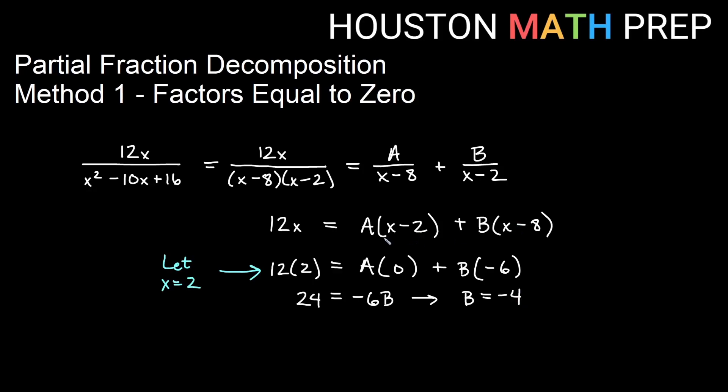So when we set the factor next to a equal to 0, it allowed us to solve for b, so setting this factor equal to 0 will let us solve for a. So in this one, we'll let x equal 8, and we'll go ahead and plug that in and solve. So that will give us 12 times 8 equals a times 8 minus 2, so that would be a times 6, plus b times 0. Over here we'll get 96, and that's equal to 6a, and when we divide both sides by 6, we'll get that a is equal to 16. So we were able to set each factor equal to 0 and solve for a and b.